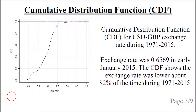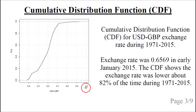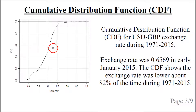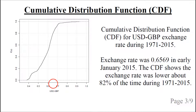We can plot a so-called cumulative distribution function, and it looks like this. We have the exchange rate on the horizontal axis, and the vertical axis shows the historical probability that the exchange rate was less than a given number. For example, using 0.6569, or about 0.66, we look it up on the axis, move up to where it intersects the black line, and read off approximately 0.82. So the probability was about 82% that the exchange rate was less than 0.66 in the period 1971 to 2015.